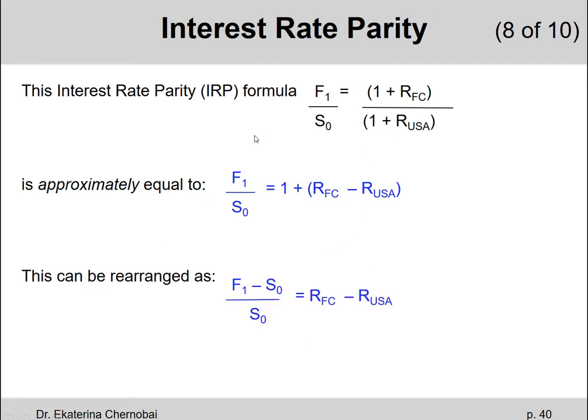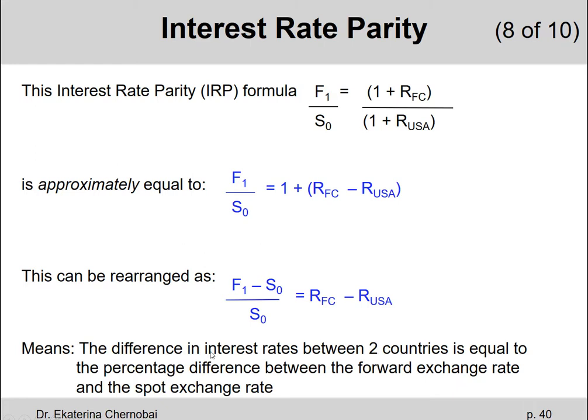One more rearrangement, so there are a whole bunch of them here. This will be the last one that actually fits what we had at the very beginning when we started this whole topic on the Interest Rate Parity. So this formula can be further rearranged to F1 minus S0, the difference divided by S0.